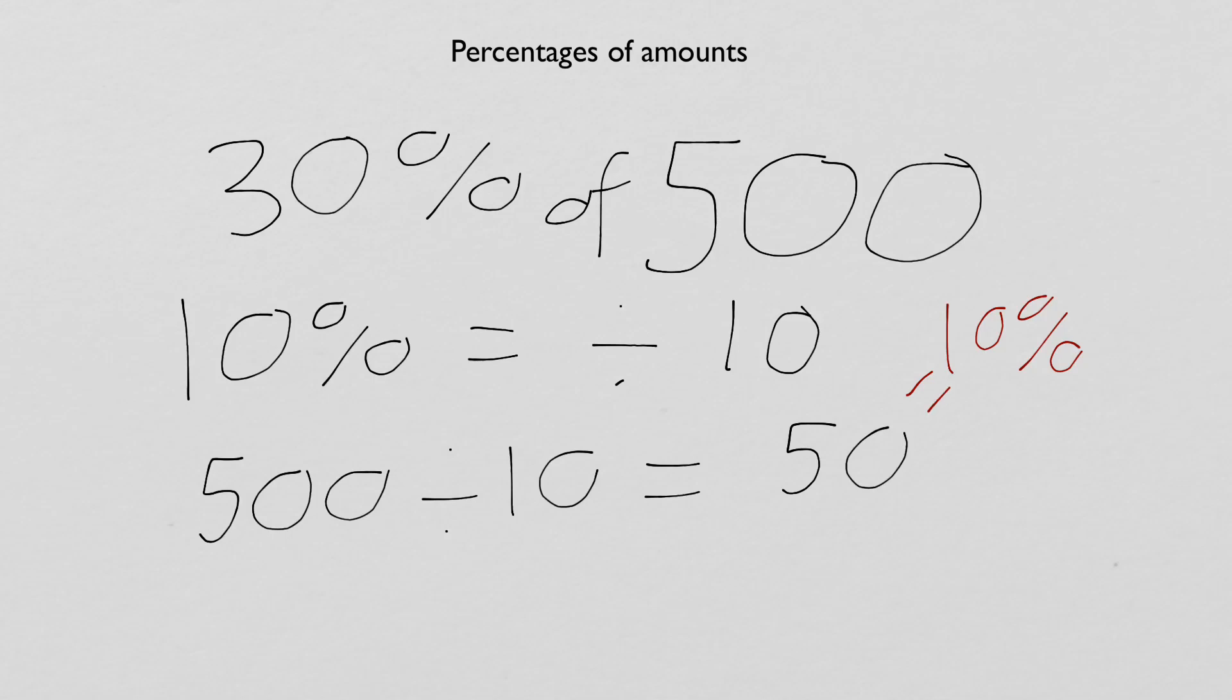However, the question asked us for what 30% of 500 was. So, if we know that 10% is 50, we need to think, what have we done to 10 to get to 30? Well, we've multiplied it by 3. So, we need to do the same thing to the 50, the amount of the percentage. So, 50 times 3, or I think 5 times 3 is 15. So, 50 times 3 is 150. And there we go. Simple as that.